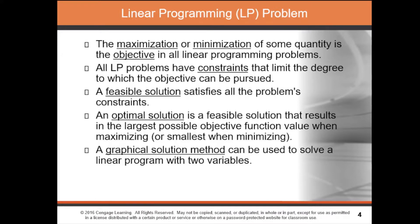All linear problems have constraints that limit the degree to which the objective can be pursued. We also have the concept of a feasible solution, which satisfies all the problem's constraints. The optimal solution is the feasible solution that results in the largest possible objective function value for maximization, and the smallest value for minimization. A graphical solution method can be used to solve a linear program with two variables.